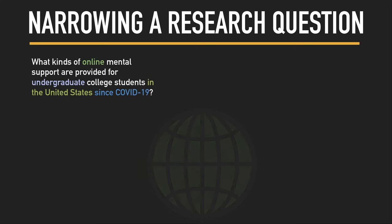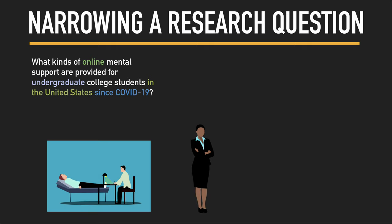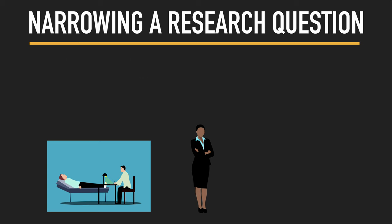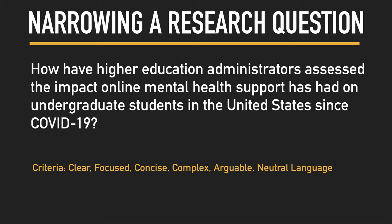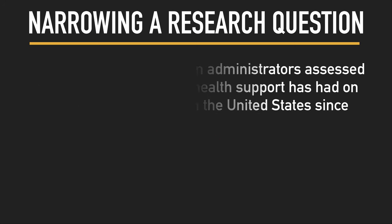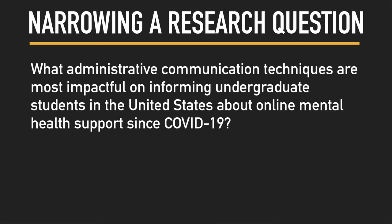Finally, you can use the disciplinary approach as a way to narrow your question — think of this as the professional perspective. A psychologist may approach mental support for college students differently than higher education administrators. At this point, our research question has become: 'How have higher education administrators assessed the impact online mental health support has had on undergraduate students in the United States since COVID-19?' Reviewing the criteria, however, it's not yet arguable. A revised, arguable version is: 'What administrative communication techniques are most impactful on informing undergraduate students in the United States about online mental health support since COVID-19?' — arguable because impact may be measured in different ways depending on the goals of an institution.